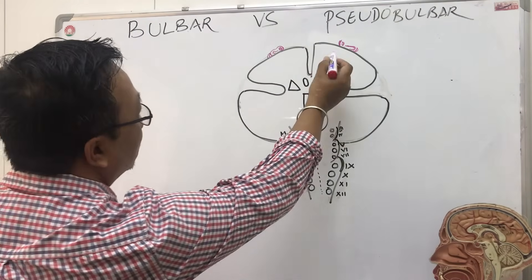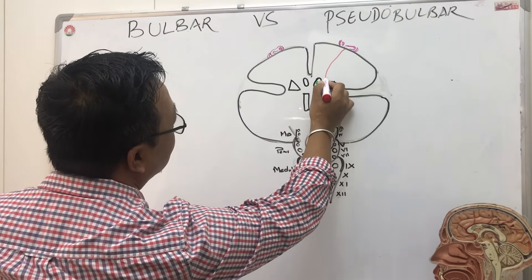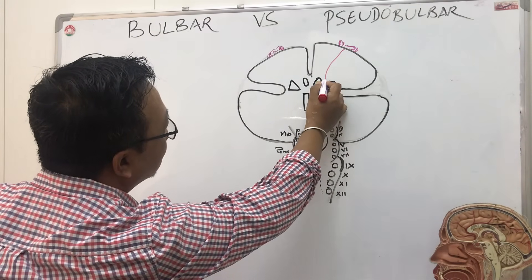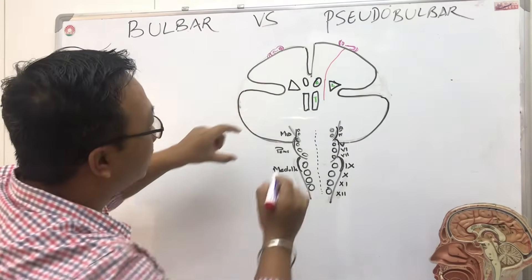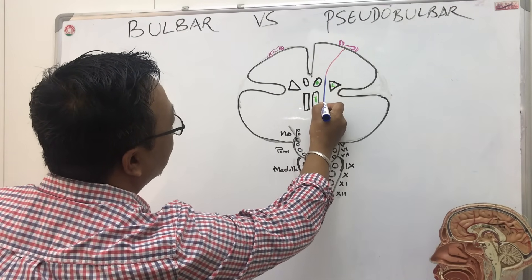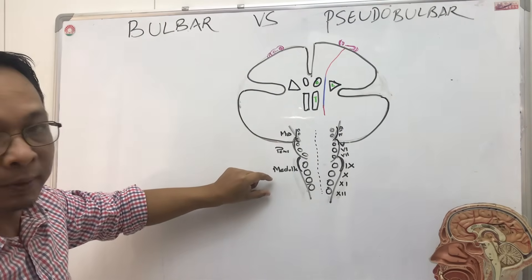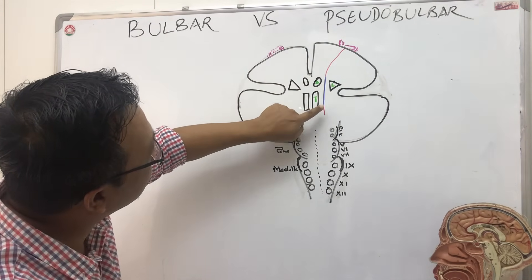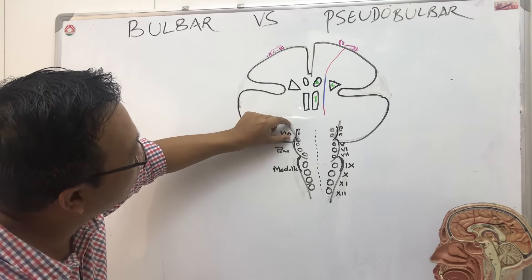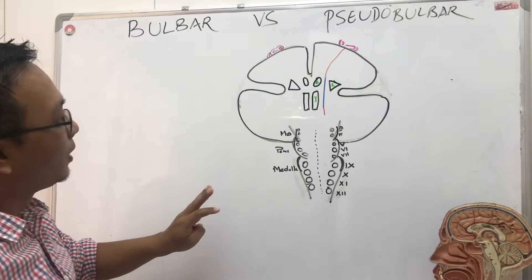This starts from the face — this is the face in the motor homunculus. The corticobulbar tract comes from the landmark between the lentiform nucleus and the caudate nucleus, and then the thalamus. This part is the internal capsule — this blue part — and it comes to the midbrain, pons, and medulla. The corticobulbar tract has dual supply; it supplies bilaterally. In the midbrain, the third and fourth nucleus; then in the pons, five, six, seven; and in the medulla, nine, ten, eleven, twelve.